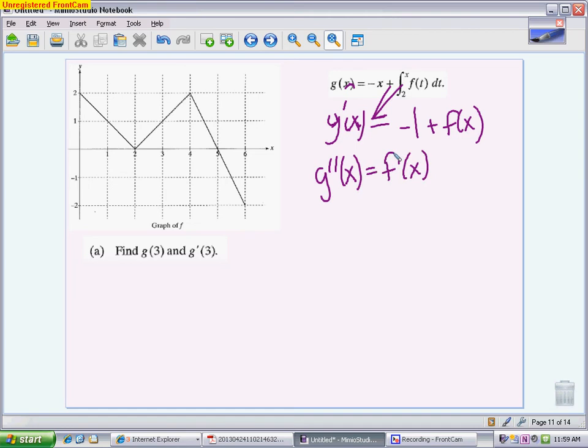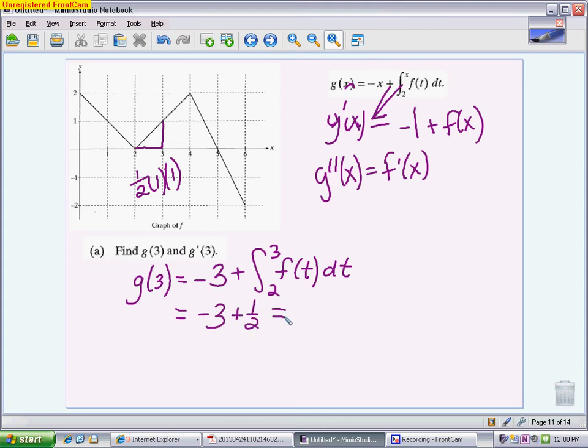So g of 3 means that I'm using that original integral equation. So instead of negative x, I'm going to put in negative 3 for x, and then the integral from 2 to 3 of f of t. So I'm going to need my picture because I need to figure out the integral from 2 to 3, which is this very small triangle. My triangle is 1 half base times height, so 1 half of 1 times 1. So I'm going to get negative 3 plus a half, giving me an answer of negative 2 and a half.